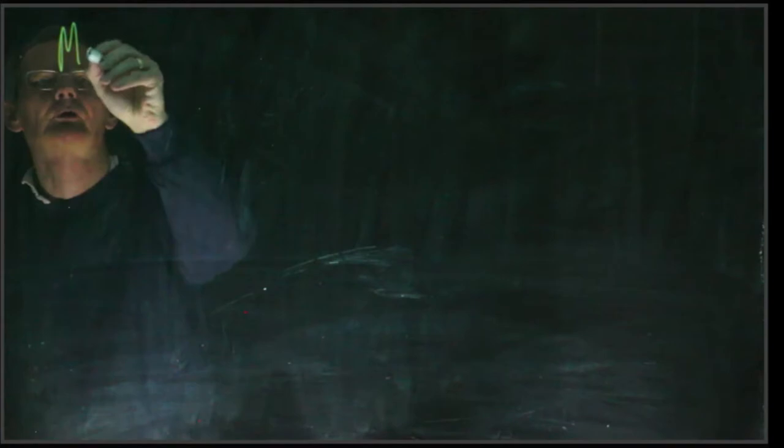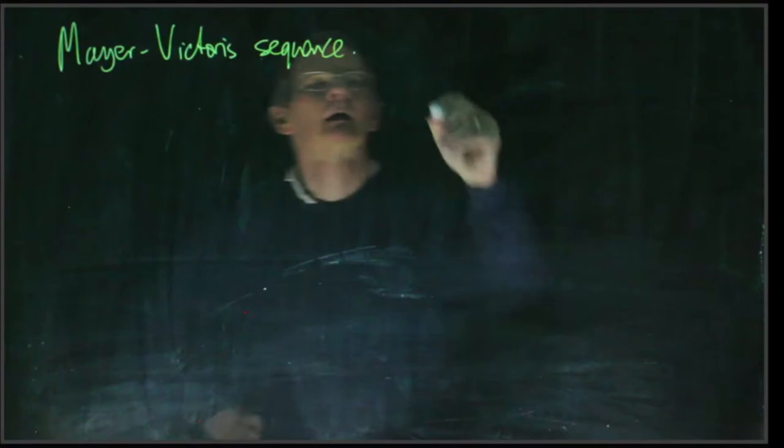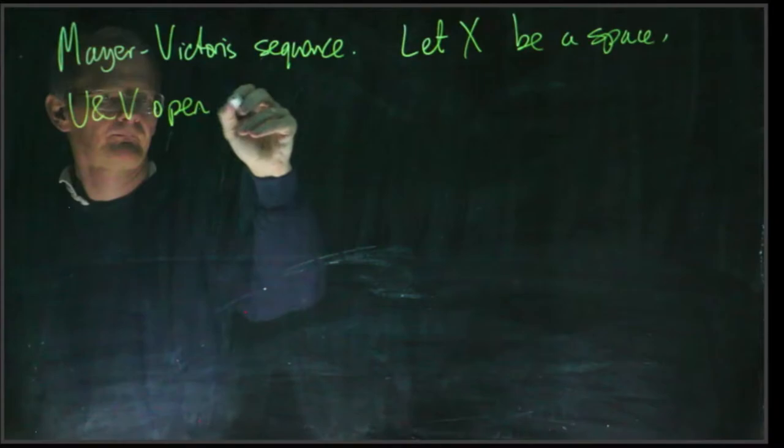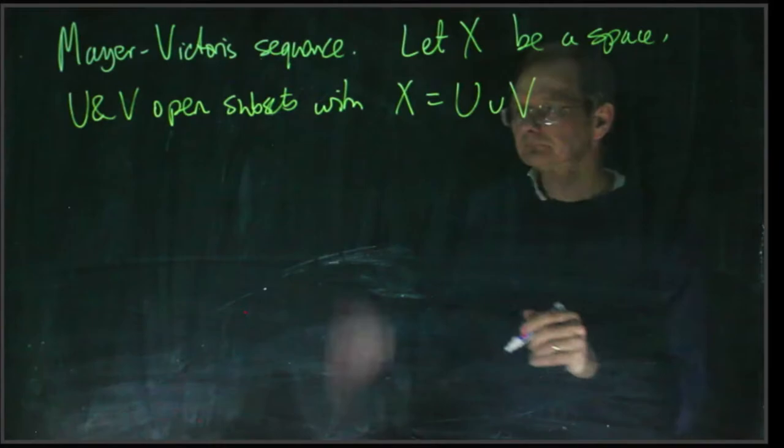In this video I'm going to introduce the Mayer-Vietoris sequence. Let X be a space, U and V open subsets, with X being equal to the union of U and V.